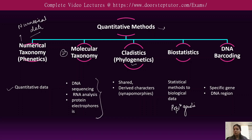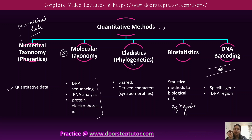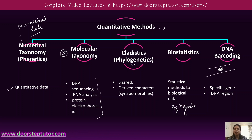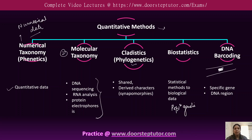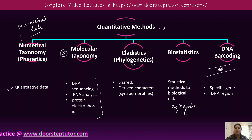DNA barcoding is another method where only specific genes from the whole genome of a particular organism can be coded. It is a very fast and accurate method of classifying organisms, or we can say species. So these are the quantitative methods where quantifying approaches are used for the classification, naming, or taxonomy of organisms.